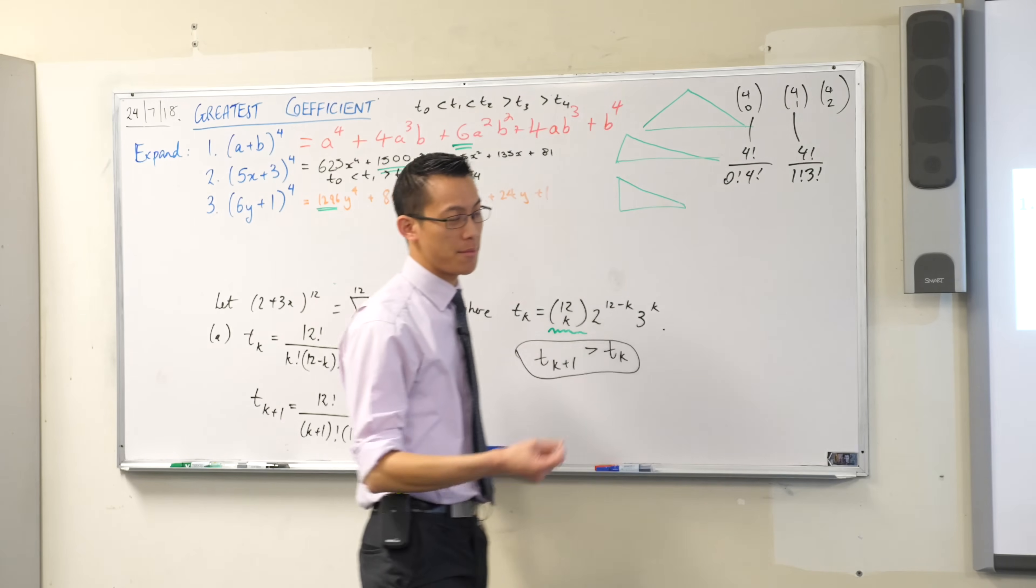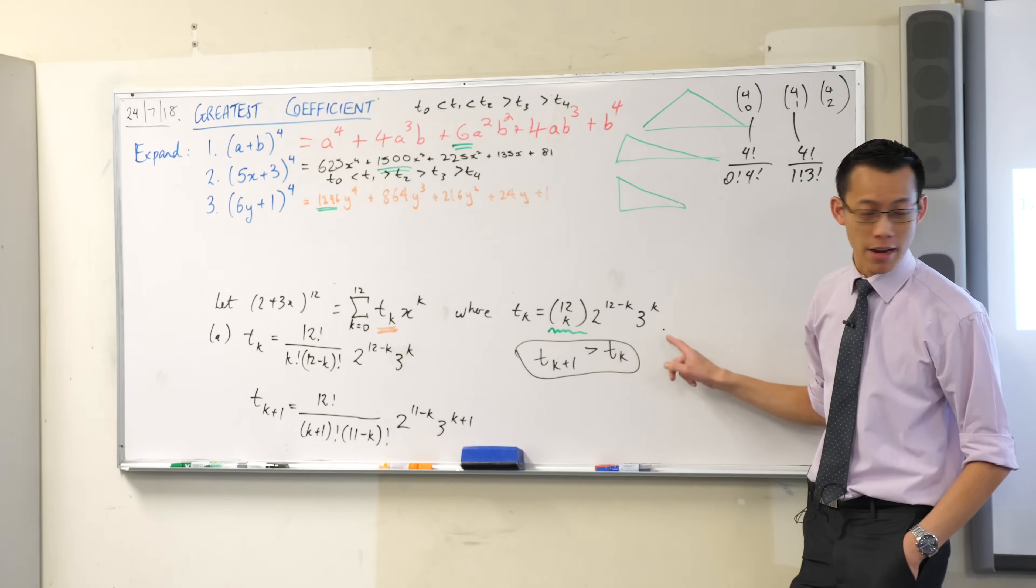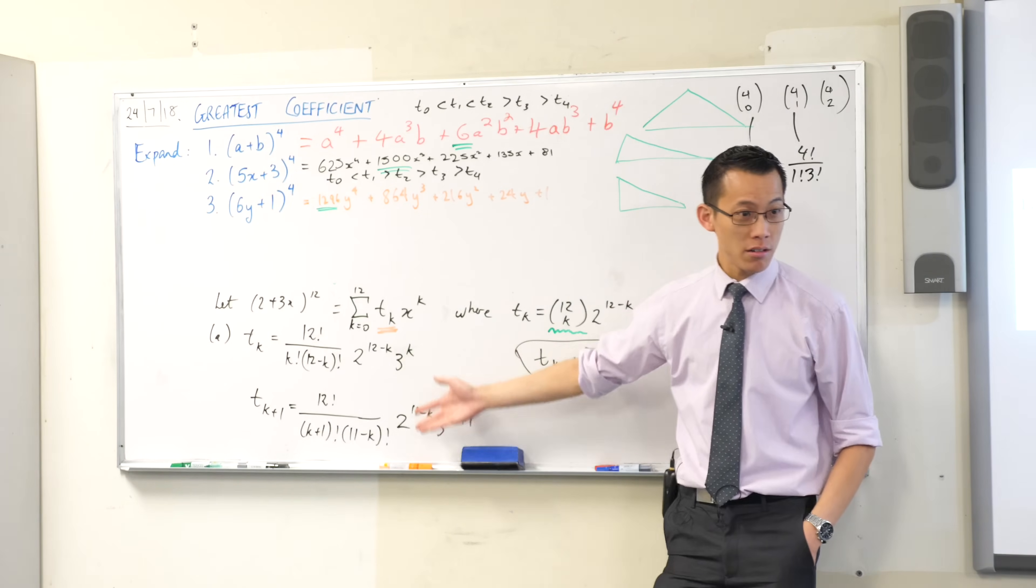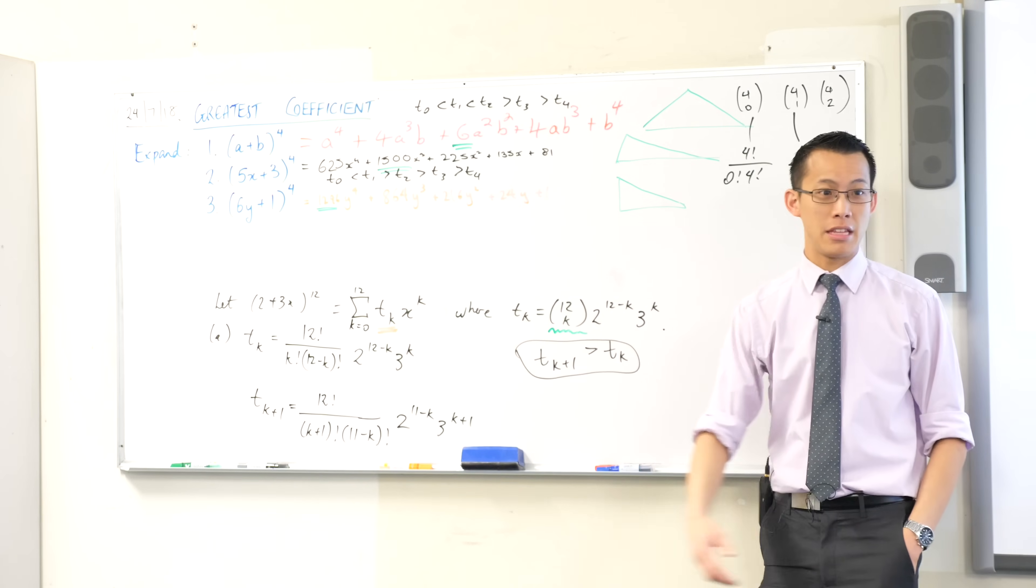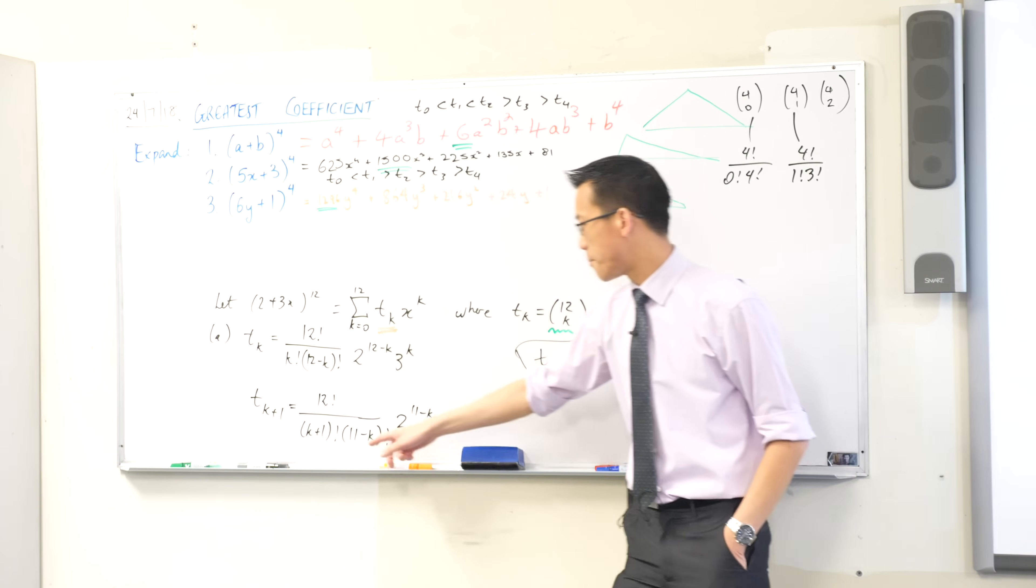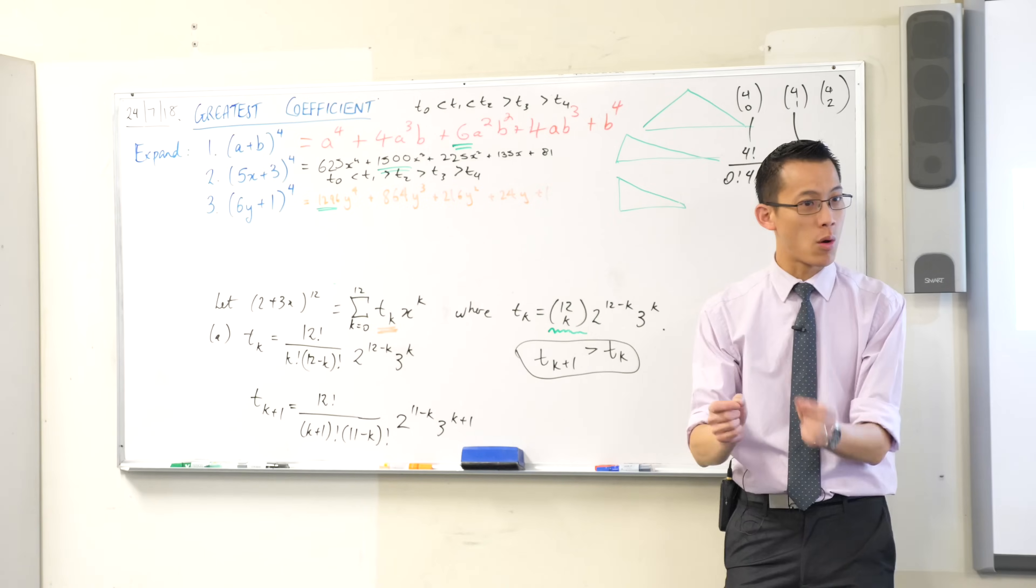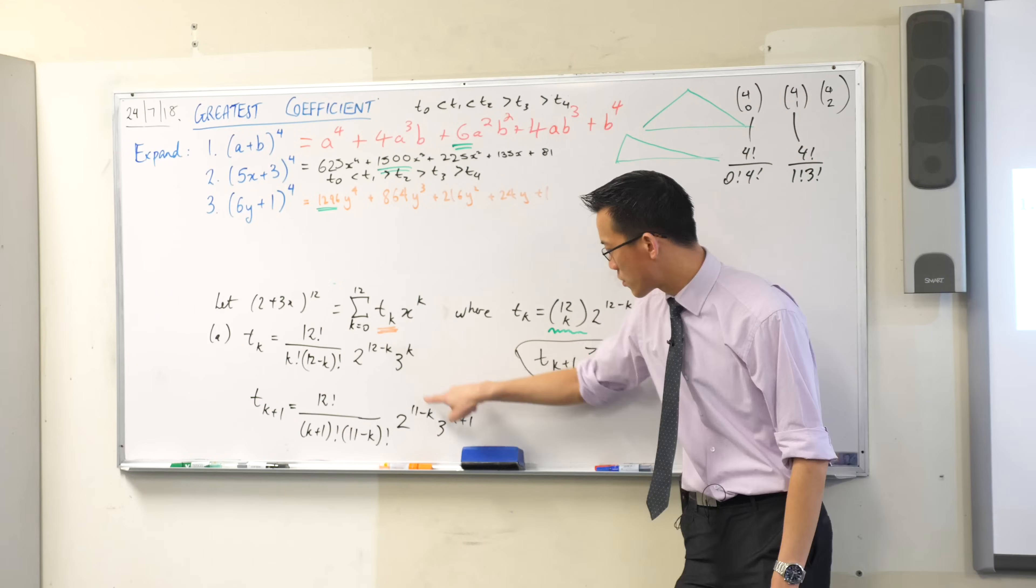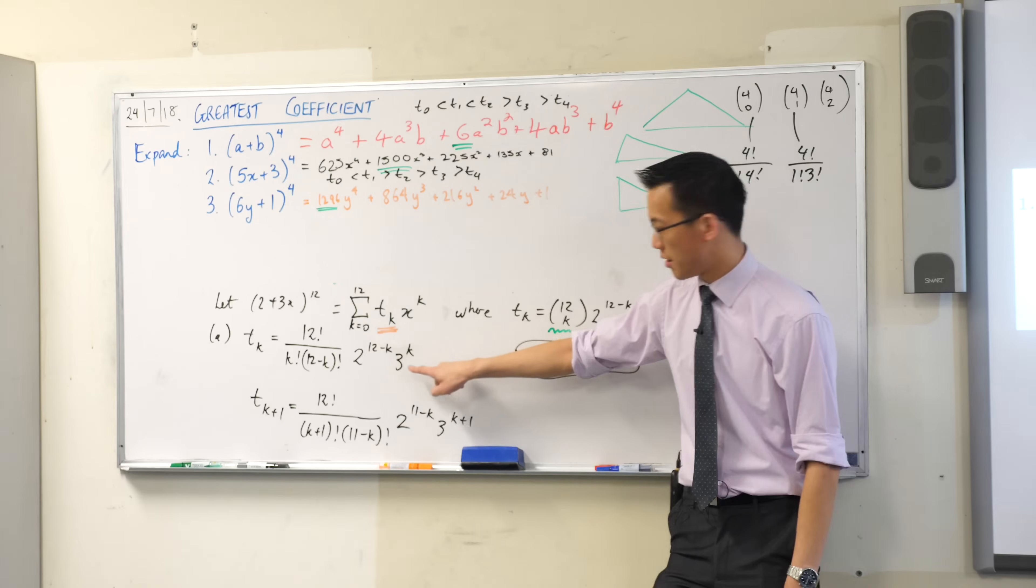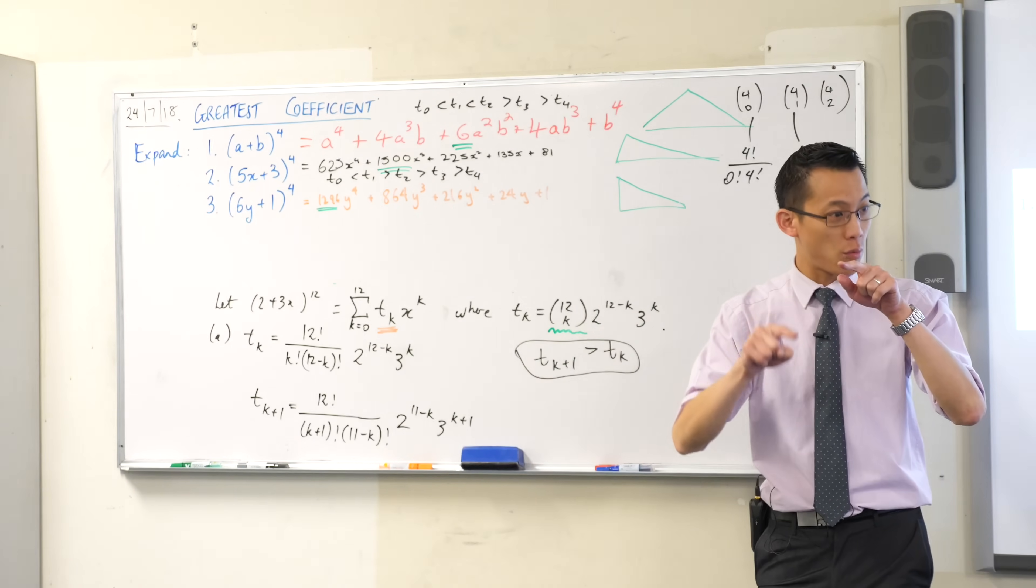Because they were built off of the same formula up here, do you see how much they have in common? They have a lot in common. For example, the 12 factorials, they're just identical. These factorials down the bottom, they're very very similar to each other. They're only off by one. And then these two bits on the end here, the number of twos and the number of threes, they are very similar. Again they are only off by one.